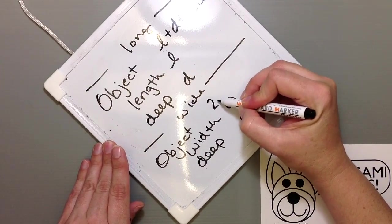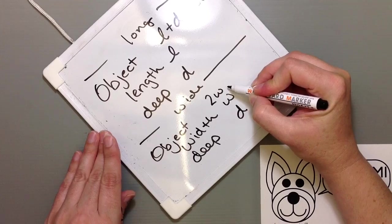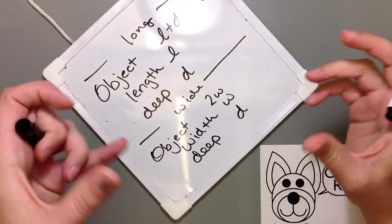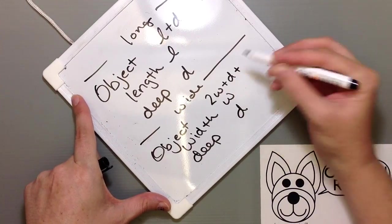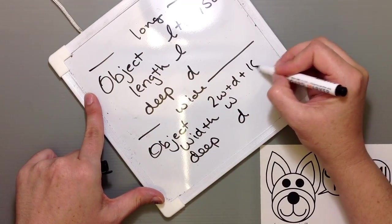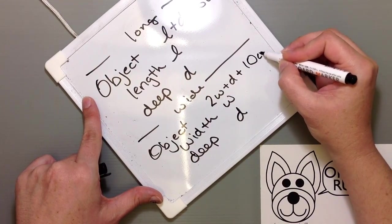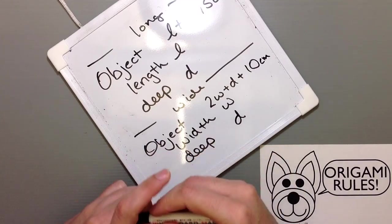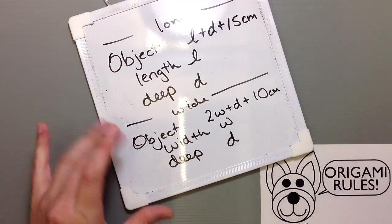So we need 2W and then we also need to add the depth, just one side of it, so just one, and then plus a little extra for the overlapping of things. So maybe give yourself a little extra with 10 centimeters. And that should give you good enough room for what you're working with to make sure everything comes together right.